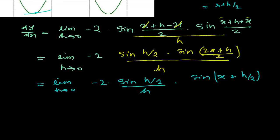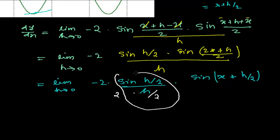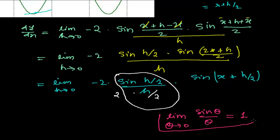Now I'm making a small adjustment: I divide h by 2 and multiply by 2, since dividing and multiplying by the same number changes nothing. I do this because this matches our formula from the limits chapter: limit theta tends to 0 of sin(theta)/theta equals 1. Here, h/2 works as theta — so sin(h/2) divided by (h/2) equals 1. Substituting that value in: minus 2 times 1 times sin(x + 0), and the 2 in the denominator and numerator cancel.